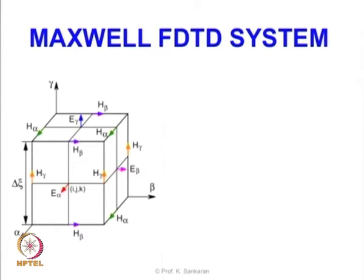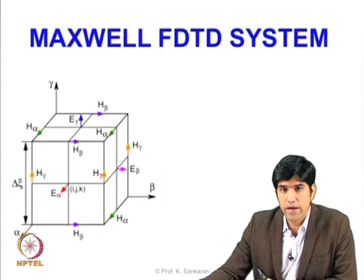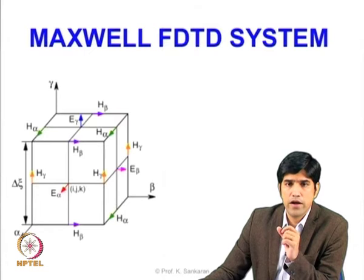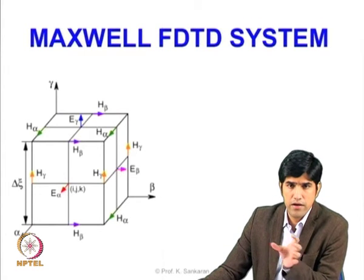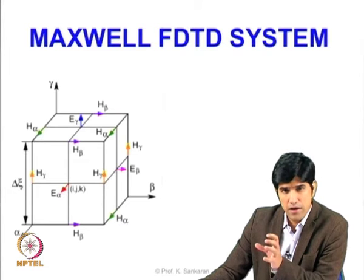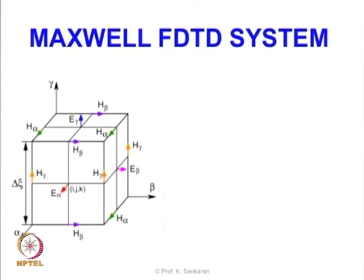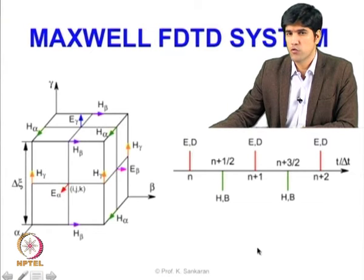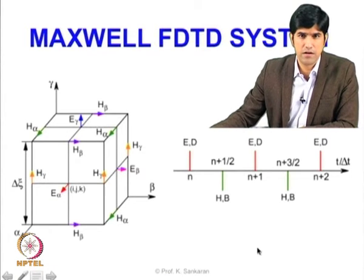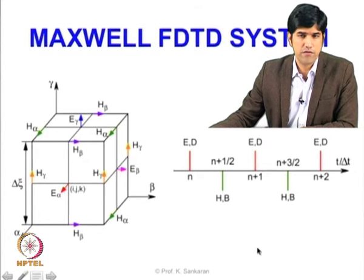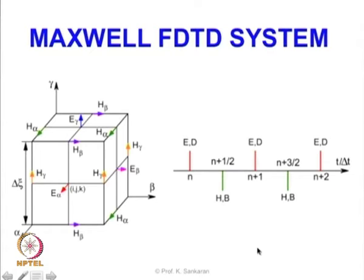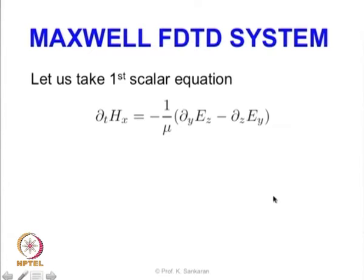This is the spatial discretization. The question is: what are we doing for the time discretization? In Maxwell's equations we have both time and space. We have found a way to model the electric and magnetic fields on two spatial coordinate sets — the primal and dual coordinates — staggered half the space length in all three directions. The electric field and magnetic field are also going to be staggered in time.